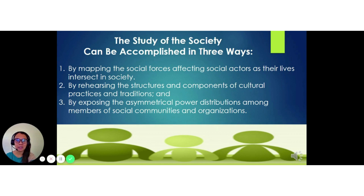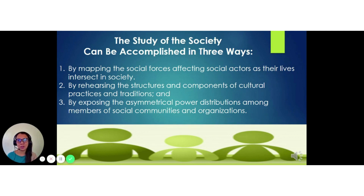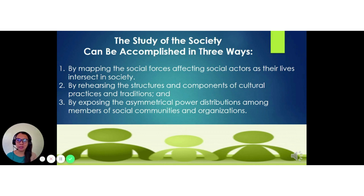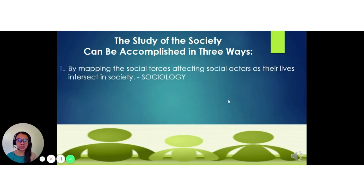These three have different and unique basic assumptions about society and the social network that comprises it, but they were made for the same purpose — to understand the dynamics of social interactions in society. In the academy, these three ways are known as disciplines. The first is the discipline of sociology.